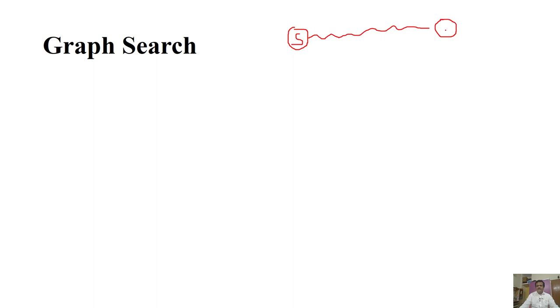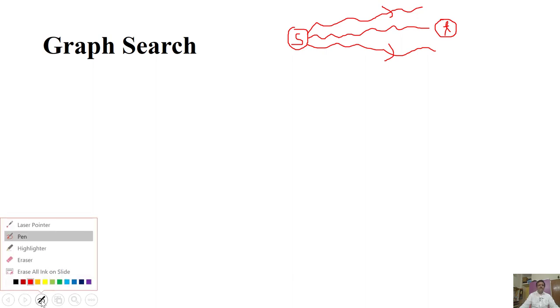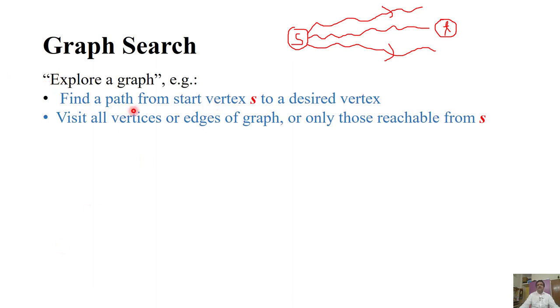What do we mean by graph search? We have to explore the graph. Given a vertex S, we want to find what vertices are reachable from S, or find a path from S to any other vertex T, or find all vertices reachable from S. These are all graph search techniques — basically exploring a graph.